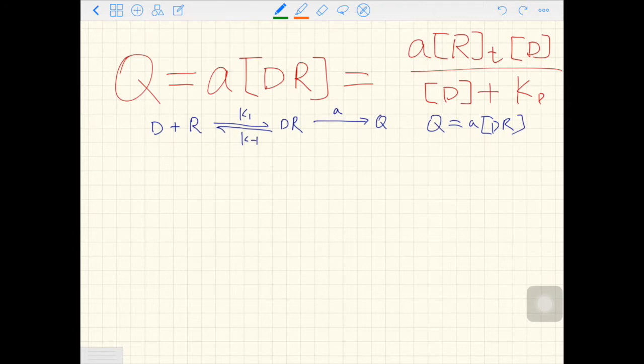Look at this part of the red equation, a times RT. It is the Q max, the maximal response you can achieve in theory. So Q max is a times RT.